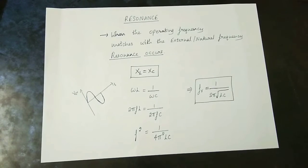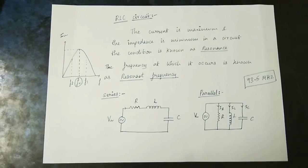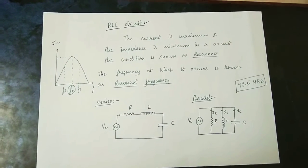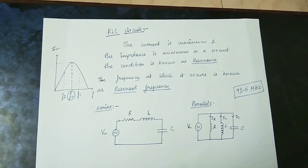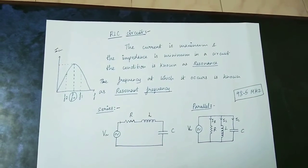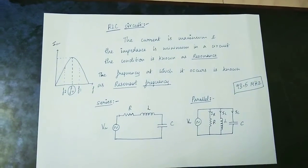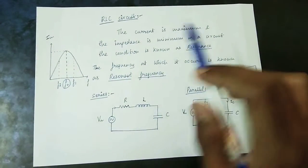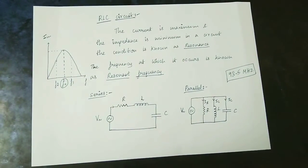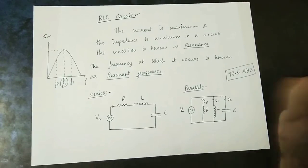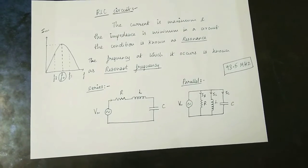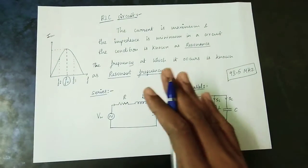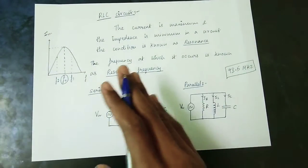What is the definition of resonance in an RLC circuit? When the current is maximum and impedance is minimum in a circuit, the condition is known as Resonance — whether in a series RLC or parallel RLC. The frequency at which current is maximum is called the Resonance Frequency.